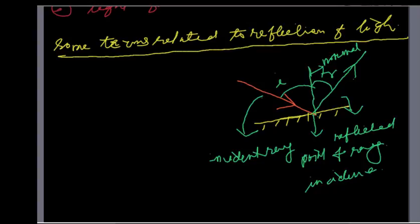Incident ray — ray of light, light ray, which is hitting the mirror, is called the incident ray. The mirroring ray is the reflected ray. The point where the ray meets the mirror is called the point of incidence. The point of incidence is perpendicular to the normal. Incident ray, normal ray, angle of incidence.